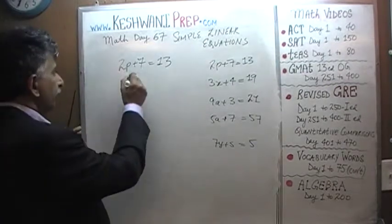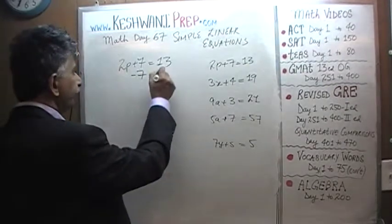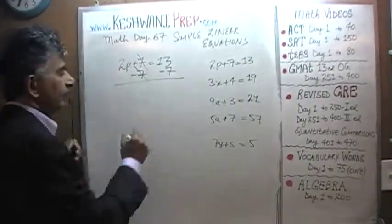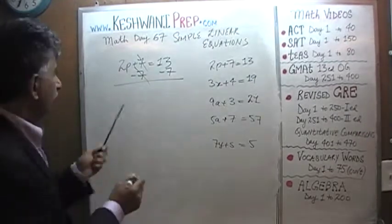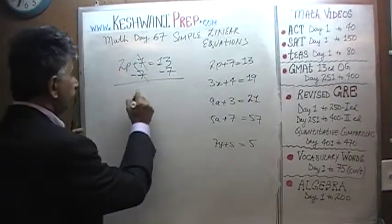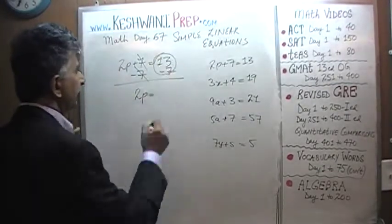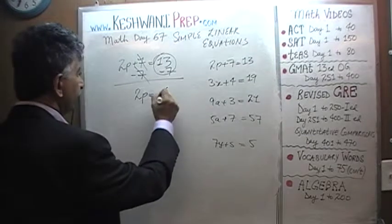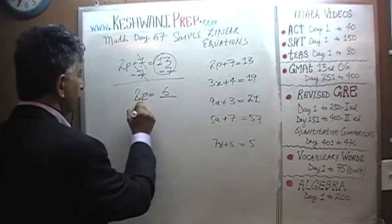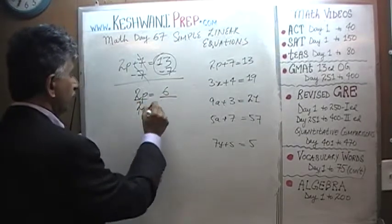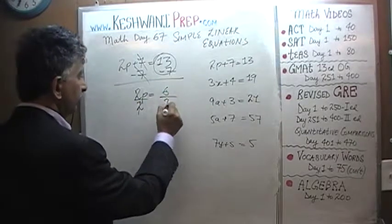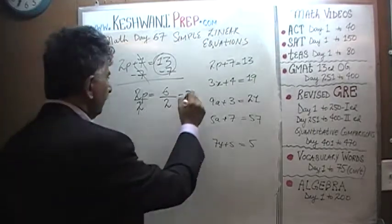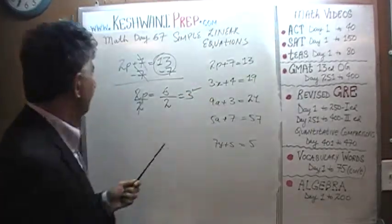Let's subtract 7 from both sides — kill this 7. Bring the 2p down. Here we have 13 minus 7, which is 6. Divide both sides by 2. We can knock out this 2, and 6 divided by 2 is 3. We have p equals 3.